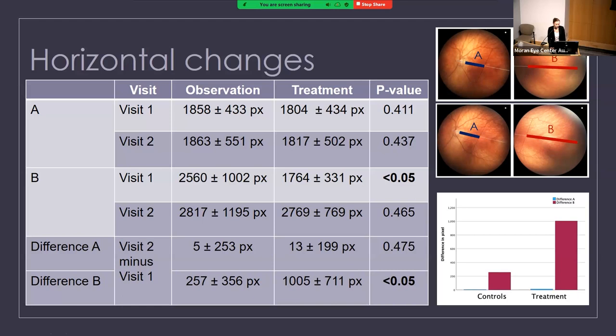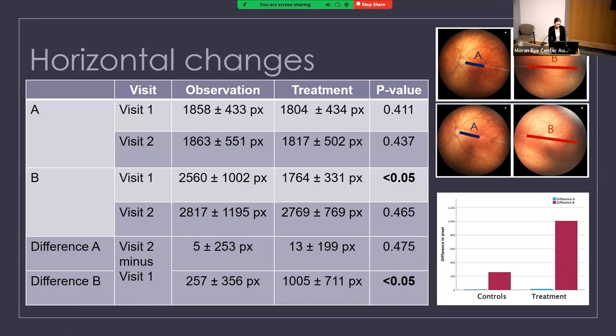We also looked at vertical changes. It's a bit more difficult to assess how vertical diameter changes over time, but since we have marking lines with known points, we examined whether those marking lines changed. There was actually a decrease in the marking line that was significant for the observation group but not significant in the treatment group. There was no significant difference between the two groups overall — the vertical diameter got slightly smaller, likely due to normal eye growth, and this did not relate to whether or not patients received anti-VEGF injections.